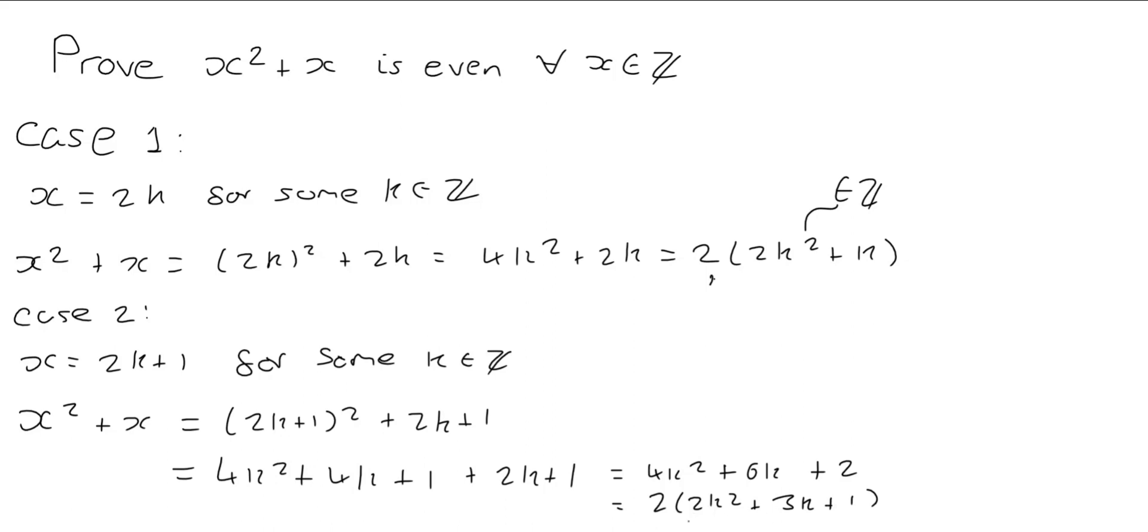And this again is an integer. We've got 2 multiplied by an integer so this is an even number. So all x in the integers, they must either be even or odd. And we've shown that in either case we have that x squared plus x is even.